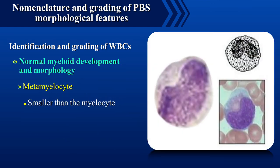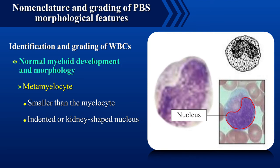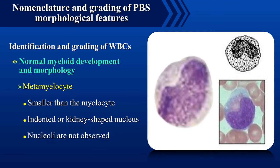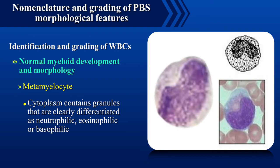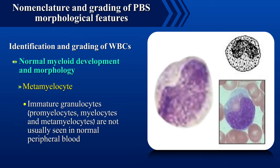Metamyelocyte is smaller than the myelocyte with an indented or kidney shaped nucleus. Nucleoli are not observed. The cytoplasm is usually clearly pink and contains granules that are clearly differentiated as neutrophilic, eosinophilic or basophilic. Immature granulocytes — that is promyelocytes, myelocytes and metamyelocytes — are not usually seen in normal peripheral blood.